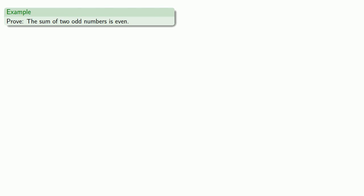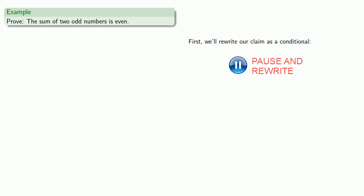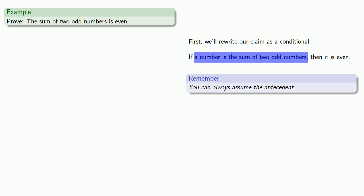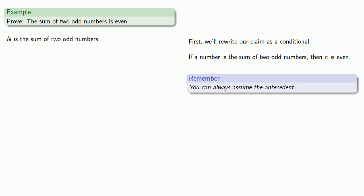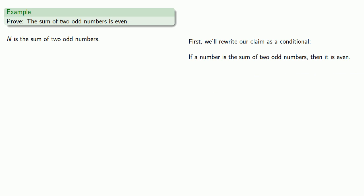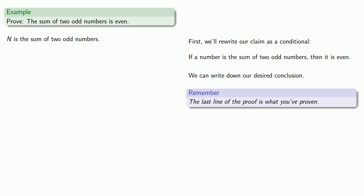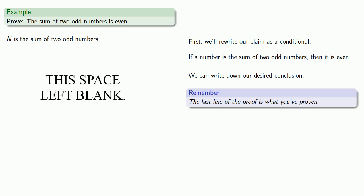Let's try to prove: the sum of two odd numbers is even. Step one: rewrite our claim as a conditional — if a number is the sum of two odd numbers, then it is even. We can always assume the antecedent, so the first line of our proof is: n is the sum of two odd numbers. We can think of this as building a bridge. We want to start with n is the sum of two odd numbers and end by concluding it is even. The last line of the proof is what you've proven, so we leave space and write our conclusion down.